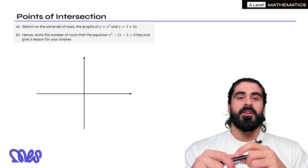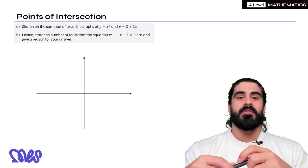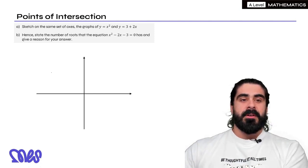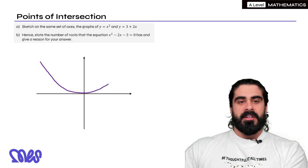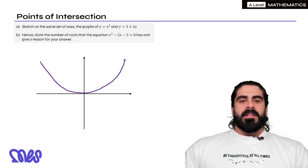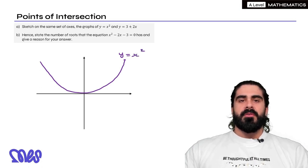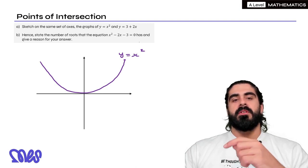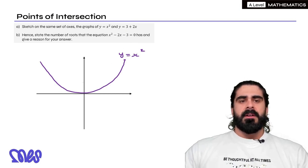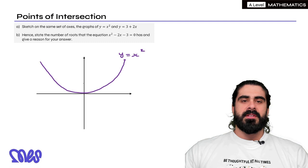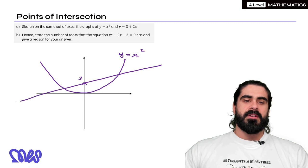Sketch on the same set of axes the graphs of y equals x squared and y equals 3 plus 2x. It's just a sketch so it doesn't need to be accurate. In the previous episode we looked at sketching general graphs. So that's the x squared graph and then 3 plus 2x. One thing to note is that the line of 3 plus 2x has a gradient of 2, and the x squared graph has a gradient that's continuously increasing. So the line crosses the y-axis at 3, then it'll have a slightly shallower gradient in the long run compared to the quadratic. So these are the two functions.